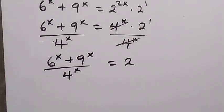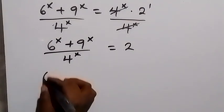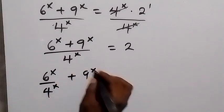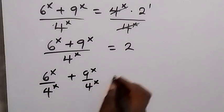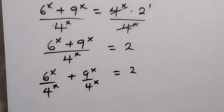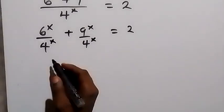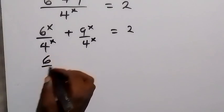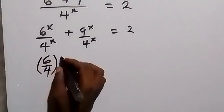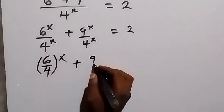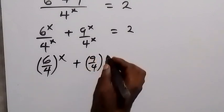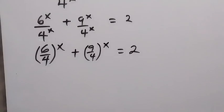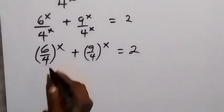In the next step we can separate this fraction. So this is 6 raised to power x over 4 raised to power x, plus 9 raised to power x over 4 raised to power x, equals 2. From here, in the next step we can rewrite this — since they have the same power, we bring the power out: we have 6 over 4 raised to power x. Then similarly, plus 9 over 4 raised to power x equals 2.